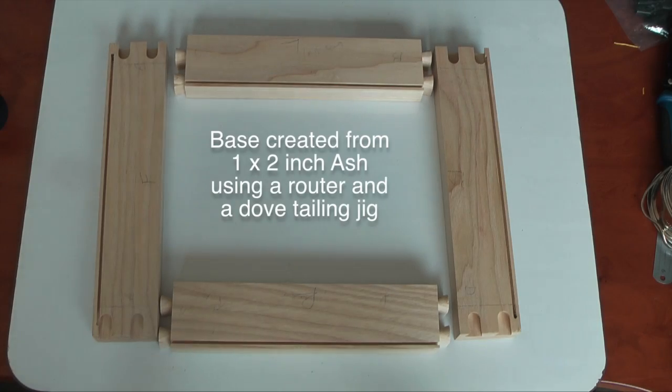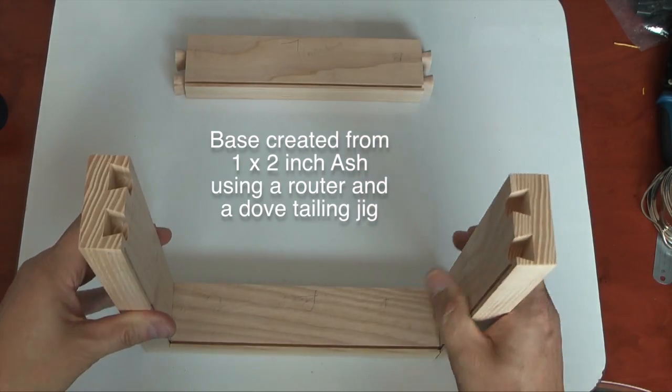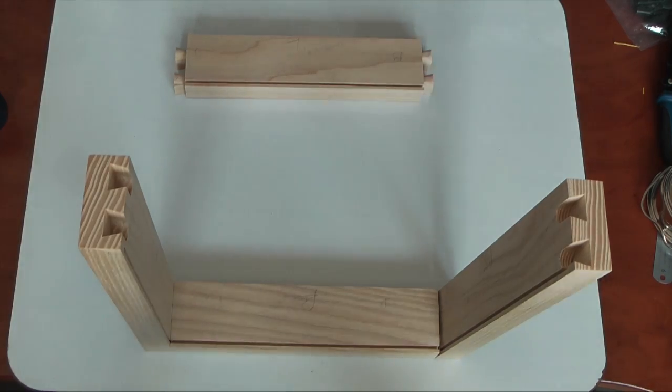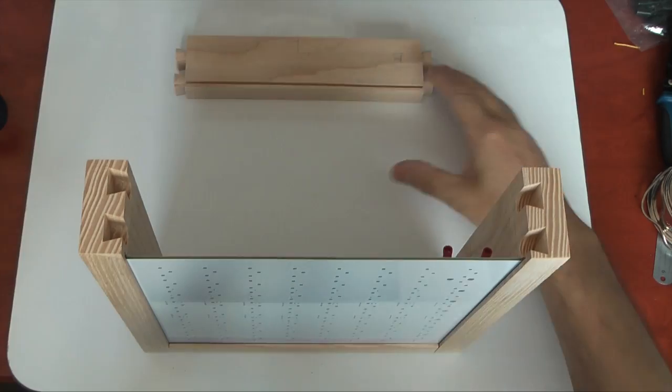This next section shows the assembly of the ash base. I created this using my router and a dovetailing jig. The board being inserted is actually the one with the spade connectors on. I later changed these to the screw terminals.